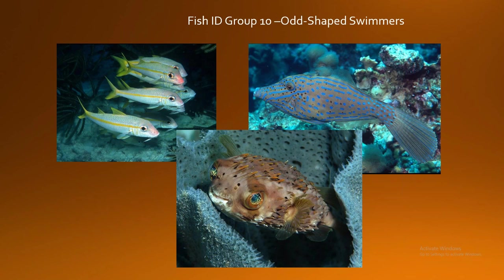We're in the home stretch — group ten, odd-shaped swimmers. These include triggerfishes, filefishes, boxfishes, goatfishes, trumpetfishes, and puffers. These are all very uniquely shaped and spend most of their time swimming. A fun fact: triggerfishes and filefishes are very closely related — they're members of, in quotes, the leather jacket family, a nickname given to describe the rough texture of their skin. Both triggerfishes and filefishes have a single spine on the front of their body right by their head which can lift up and lock into place, like a little cowlick used for self-defense.